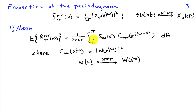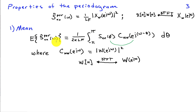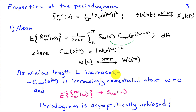It turns out the mean is given by 1 over 2 pi L times f, the integral from minus pi to pi of S_xx of theta times C_ww of e to the j quantity omega minus theta, d theta. So this is a convolution between the true underlying power spectrum and the function C_ww, which is just the magnitude squared of the DTFT of the window function. The magnitude squared of the window function distorts the true power spectrum to give the mean we obtain. As the window length increases, C_ww becomes increasingly concentrated about omega equals zero, and the mean value of the periodogram converges to the true spectrum. So asymptotically, as L increases, this estimator is unbiased.